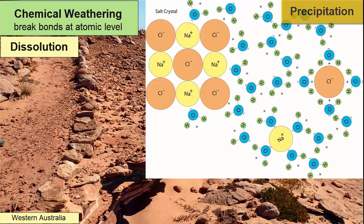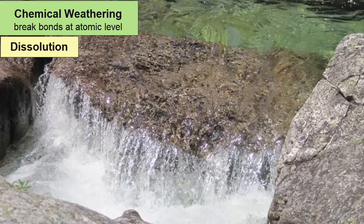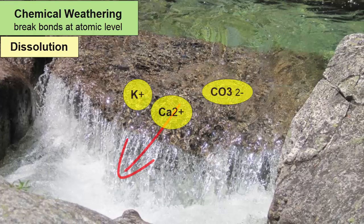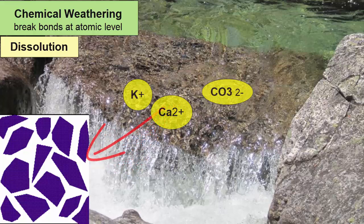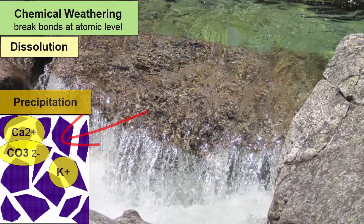The opposite of dissolution is precipitation — the combining of ions to form solid crystals that settle out of water. Precipitation happens when water rich in dissolved ions evaporates, taking the water molecules away and allowing the ions to find each other again. If the water involved with dissolution is flowing water like rainwater, river water, or waves, the dissolved ions will be removed from the rock and taken to a new environment where precipitation may later happen, such as a cement between sediment grains.